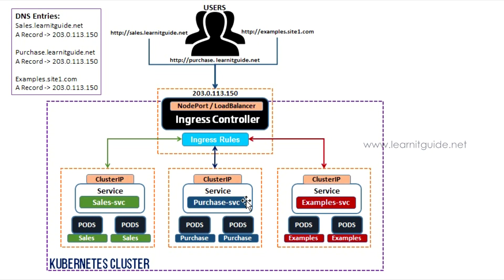We already have Kubernetes Services like Load Balancer and Node Port. These types are all for accessing from outside the cluster. In a single Ingress resource, you can do load balancing, name-based virtual hosting, and SSL termination. There are many features in Kubernetes Ingress. From a management point of view, you can manage a single resource through multiple services.